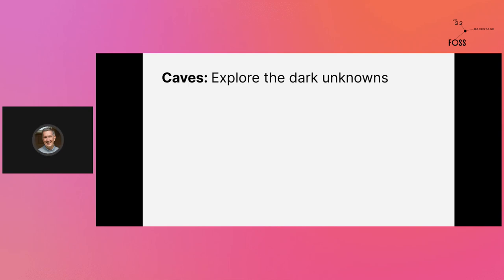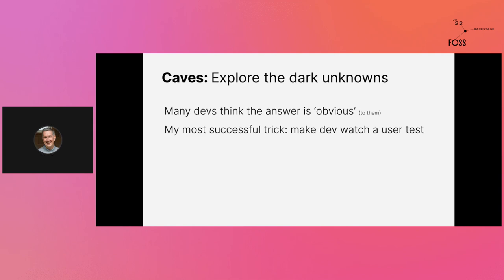Caves are about exploring the dark unknowns. Most devs think that the answer is obvious, at least to them — just add another button or make a weird error message; if the user has read the manual, they'll know what to do. The most powerful trick I have in my arsenal to gain trust with a developer or product manager is to have them watch a user test. Because when they see real, intelligent people struggling with the software, it usually makes a convert of them — they understand that they're not the user, and really smart, reasonable people can be completely confused.